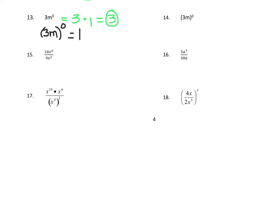Number 15 — we see division here. With the numbers we just divide them: 18 divided by 9 is 2. And when you're dividing two terms with the same base, you subtract the exponents. So 6 minus 2 is 4, giving us x to the 4th. You can think of it as two of the x's on the bottom canceling with two of the x's on top, leaving four x's on top. So the answer is 2x to the 4th.